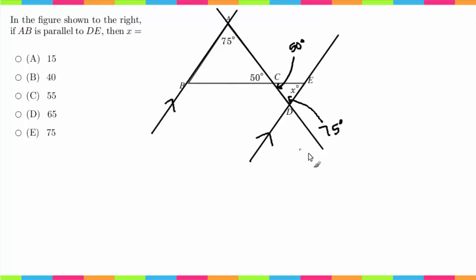So they're called alternate. Alternate has to do with what side of the transversal they're on. So if they're on opposite sides of the transversal, they're called alternate. If they're on the same side, they're called same side.